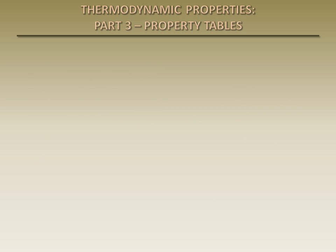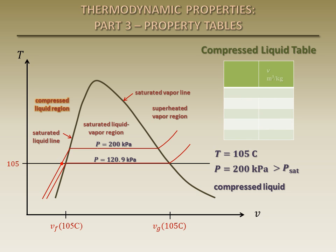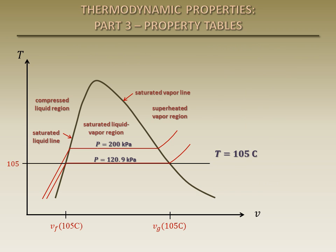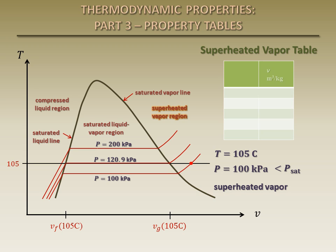Now let's go back to our original example where we concluded that water at the given state was a compressed liquid. The properties of compressed liquids can be found in the compressed liquid tables, where they are given at discrete temperature and pressure values. In the absence of appropriate compressed liquid data, a general approximation is to treat the compressed liquid as a saturated liquid at the given temperature. The properties of superheated vapors can be found in the superheated vapor tables, where they are also given at discrete temperature and pressure values.